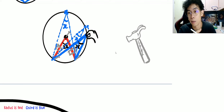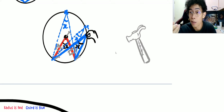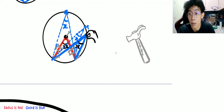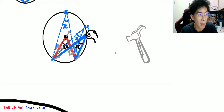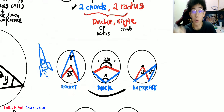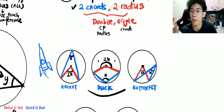Butterfly is actually a rocket. Students say 'teacher, I thought butterfly's 2x looked like it's inside' — no, it's actually outside. Butterfly is a rocket. Understand? When you see this, you'll know for sure.